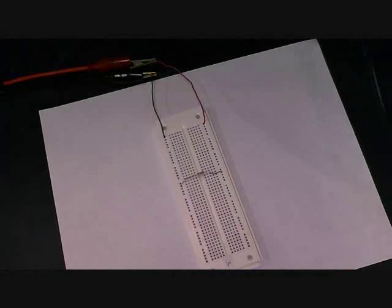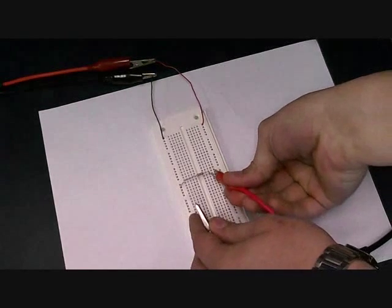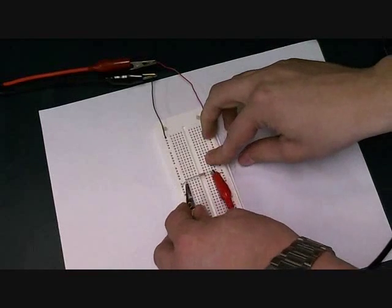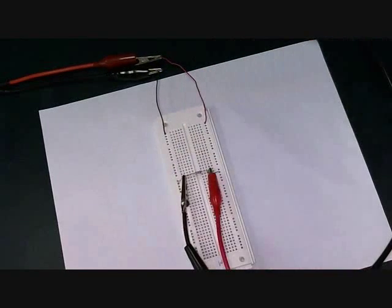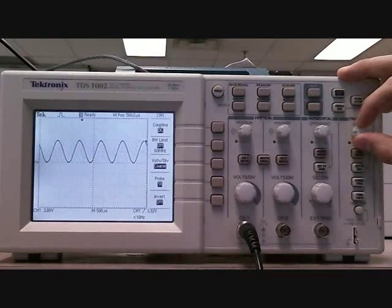So we are going to hook up the oscilloscope and look at the results. So red goes to red. And black goes to black. And this is what we get. And I'm going to trigger it so we can see it easier.